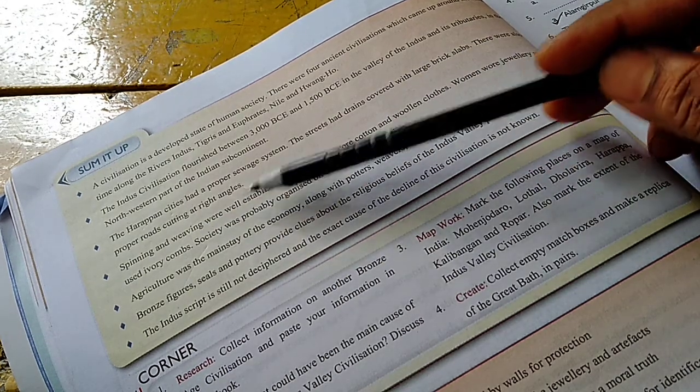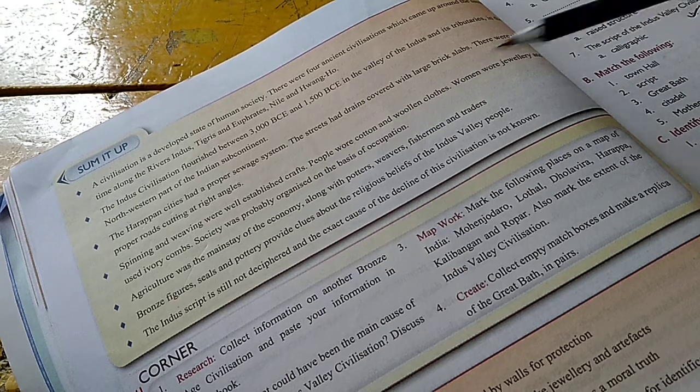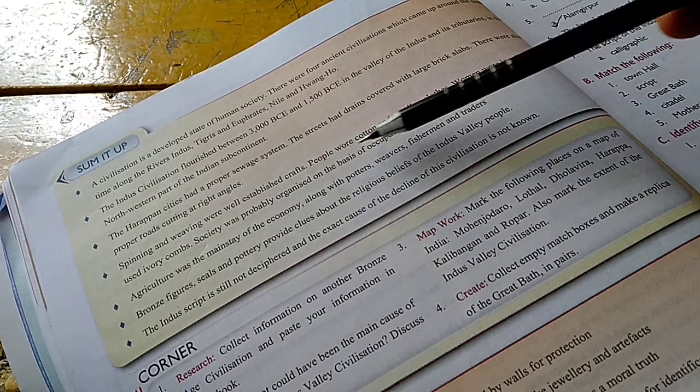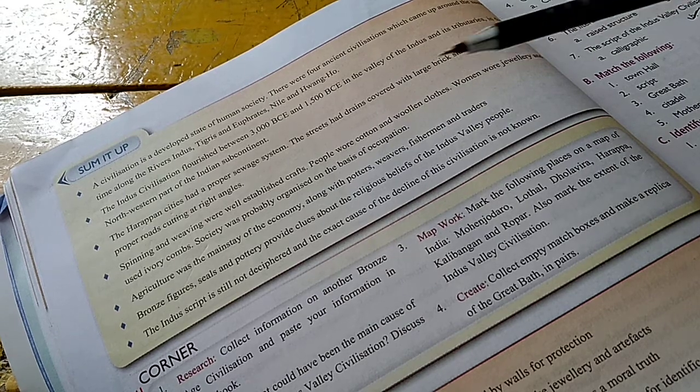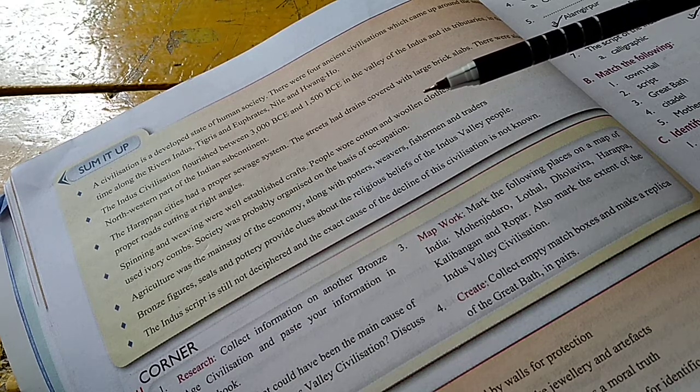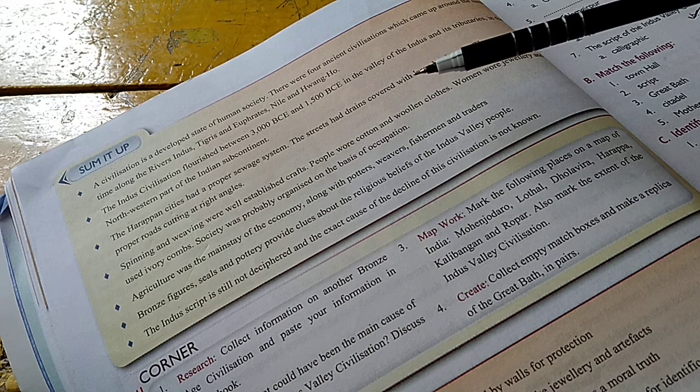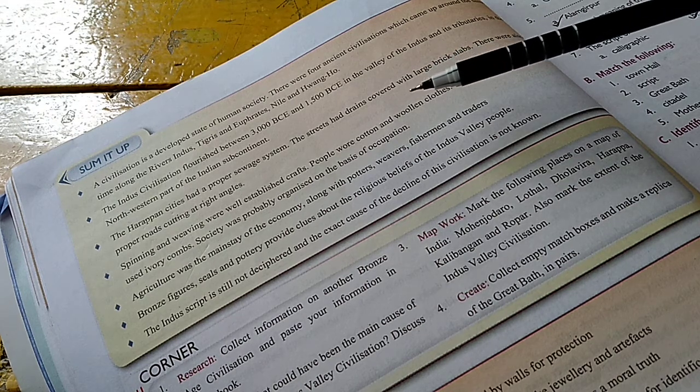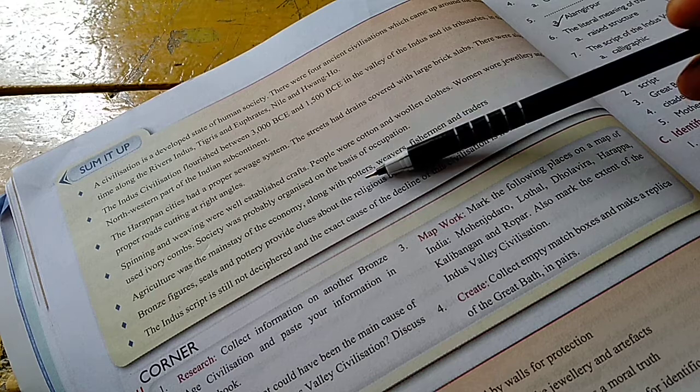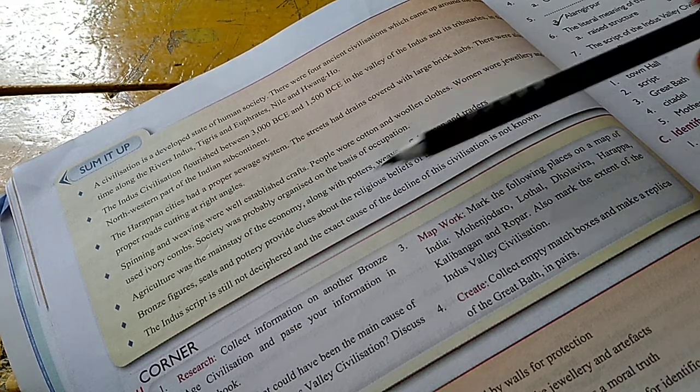Spinning and weaving were well established crafts. People wore cotton and woolen clothes. Women wore jewelry and used ivory combs. Society was probably organized on the basis of occupation. We discussed earlier that food production and cultivation was surplus, so not everyone depended on agriculture. Other trades also flourished - spinning, weaving, ivory work, making jewelry from ivory and metal casting. All these were done in the Harappan civilization.